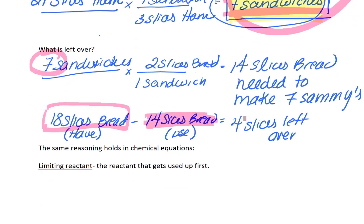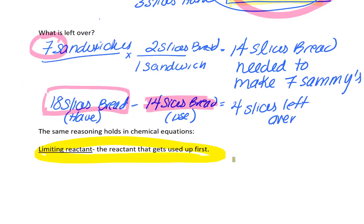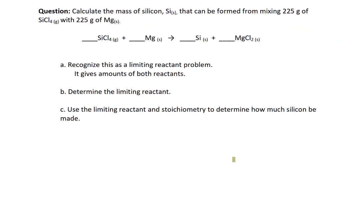This same reasoning applies to chemical reactions. One of the compounds in the reaction is going to get used up first. It's really hard to plan a reaction where all your reactants get used up — something is always going to be left over. The limiting reactant is the reactant that gets used completely during the course of the chemical reaction, and it's called the limiting reactant because it stops you — it limits you from making more of the product.